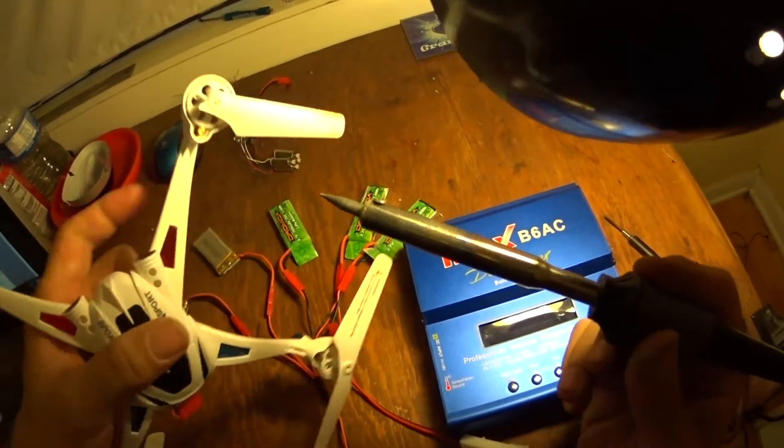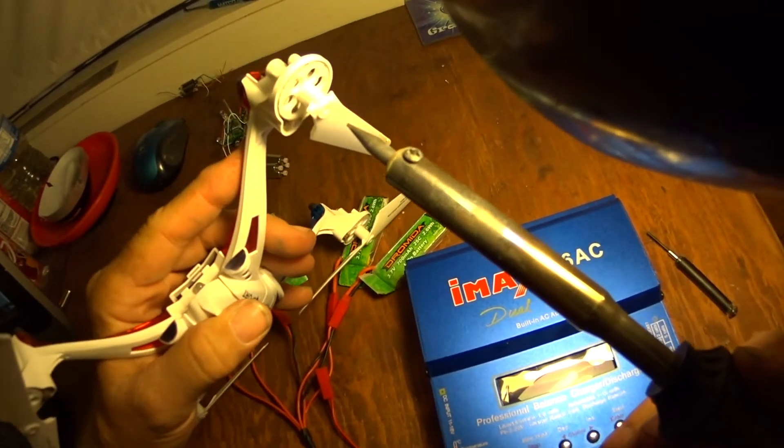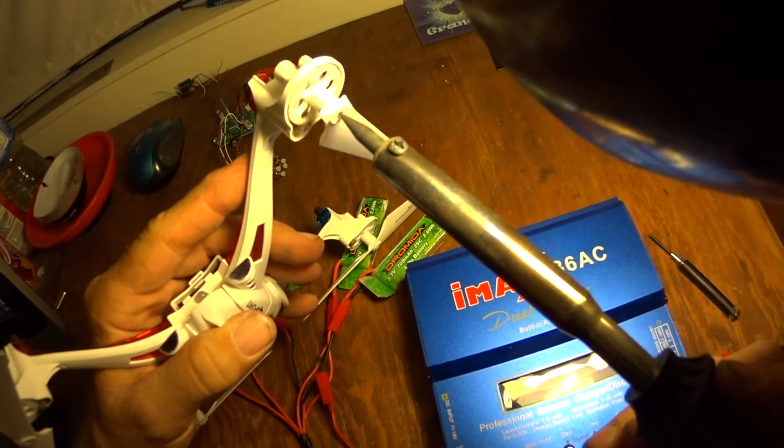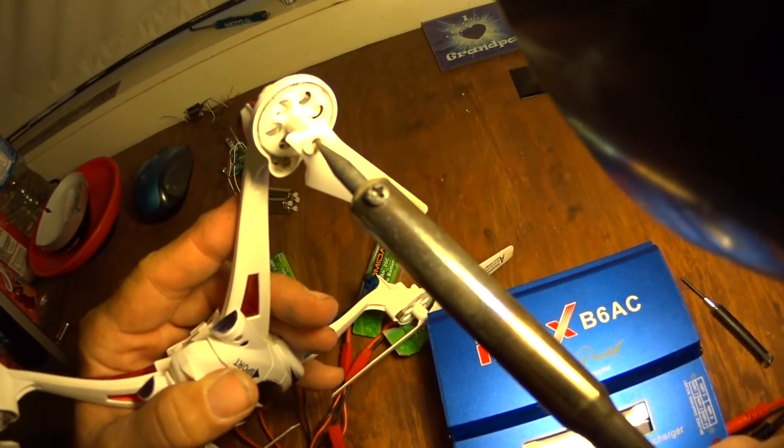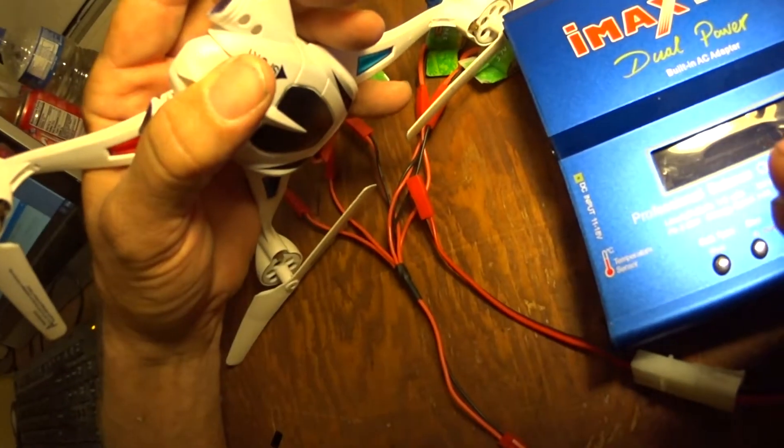This is a cheap soldering iron. It doesn't have a lot of distance. Put it right in the center of that screw.